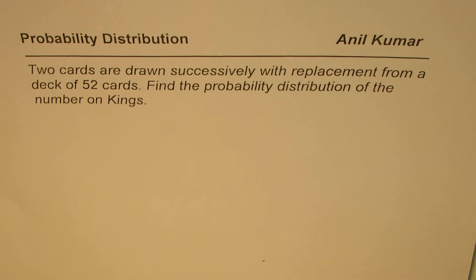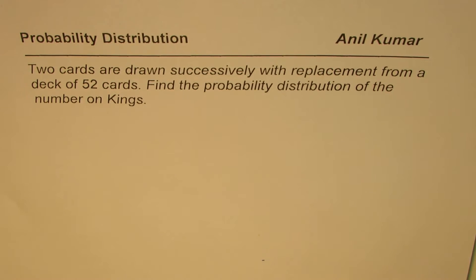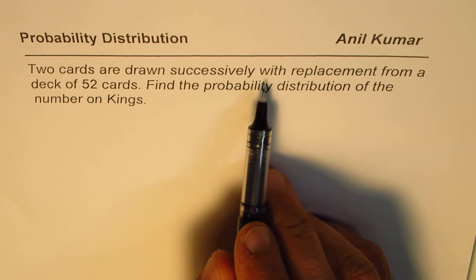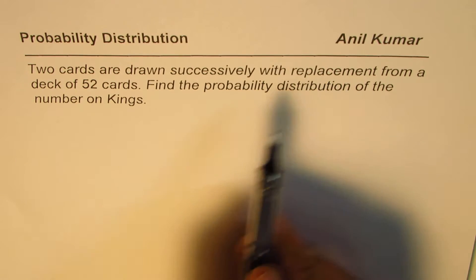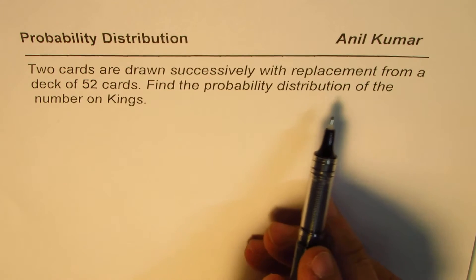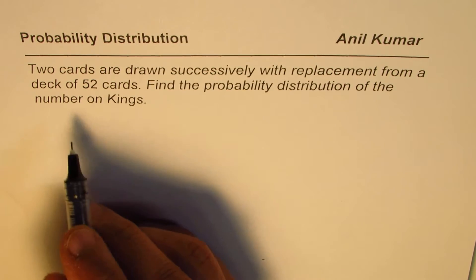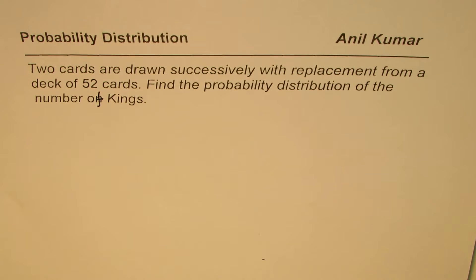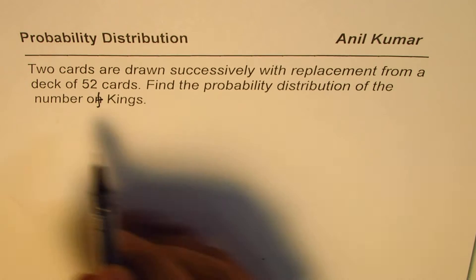I'm Anil Kumar, sharing with you a very interesting question on probability distribution. Two cards are drawn successively with replacement from a deck of 52 cards. Find the probability distribution of the number of kings. Two cards are drawn and we want to find out the probability distribution of the number of kings.